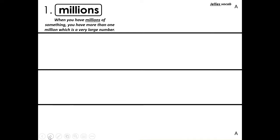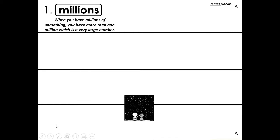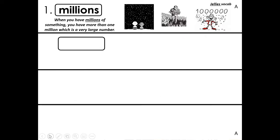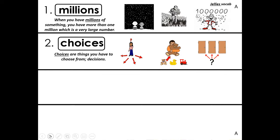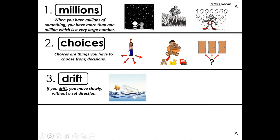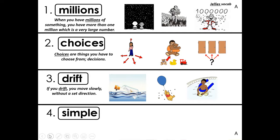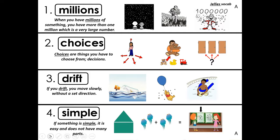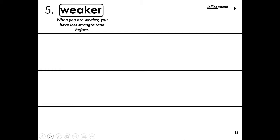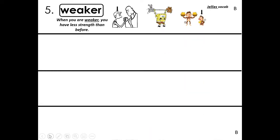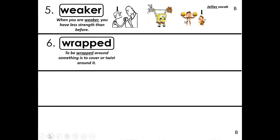Millions: when you have millions of something, you have more than one million, which is a very large number. Number two, choices: choices are things you have to choose from. Decisions. Number three, drift: if you drift, you move slowly without a set direction. Number four, simple: if something is simple, it is easy and does not have many parts. Number five, weaker: when you are weaker, you have less strength than before. Number six, wrapped: to be wrapped around something is to cover or twist around it.